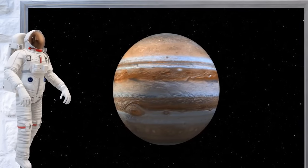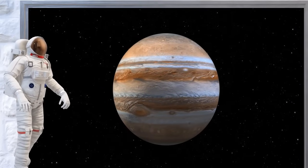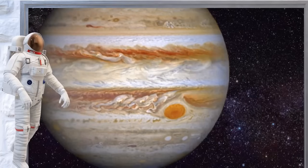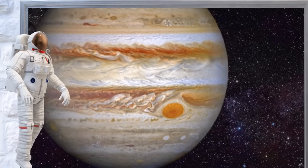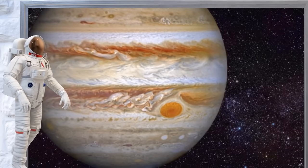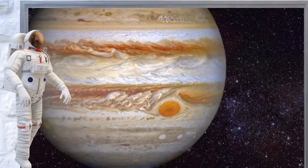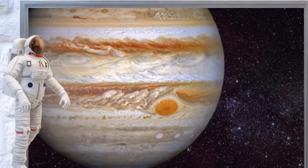Jupiter is the fifth planet and the biggest one in our solar system. It's a gas giant, which means it's mostly made of gas, not rock. It has a big red spot which is actually a storm.